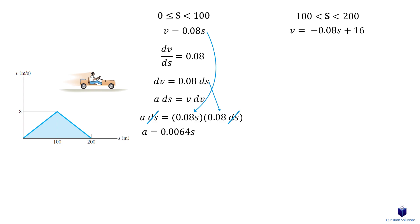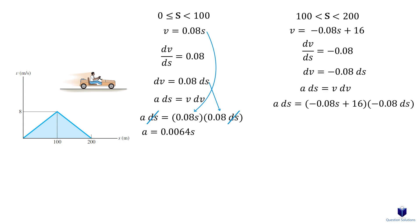For the second segment, take the derivative of the velocity equation: dv over ds equals negative 0.08, so dv equals negative 0.08·ds. Put this into a·ds equals v·dv: a·ds equals (negative 0.08s plus 16) times (negative 0.08·ds). Cancel out the ds and simplify to get the acceleration equation for the second segment.